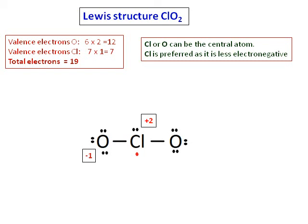When I distribute the electrons, you can see that the central atom Cl has one unpaired electron and its octet is not complete. It has only 7 electrons around it.